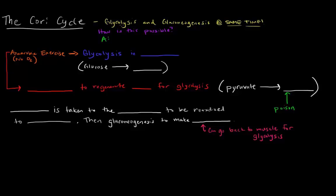In this case we're going to talk about glycolysis and gluconeogenesis occurring at the same time. If you recall, before we mentioned that you can't have glycolysis and gluconeogenesis going on in the same cell at the same time. That wouldn't make sense. Why would you want to break down glucose and make glucose at the same time? It doesn't make sense.